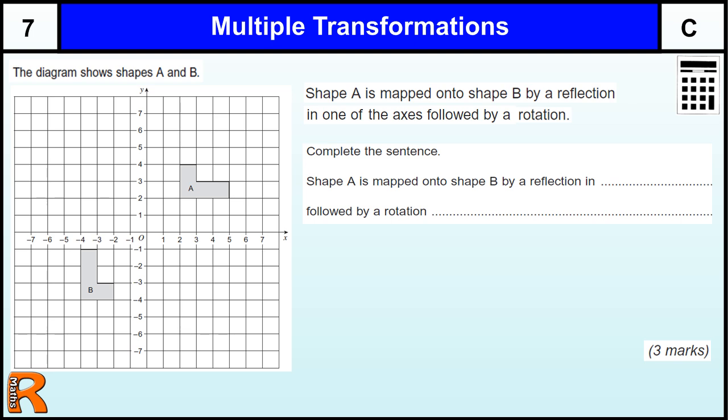Okay, transformation question, grade C, multiple transformations. We've got a shape A mapped onto shape B by reflection in one of the axes followed by rotation.